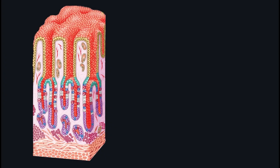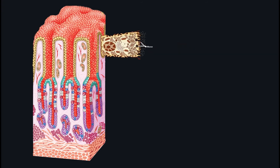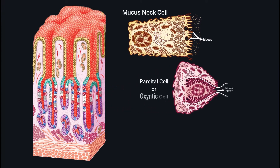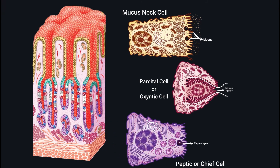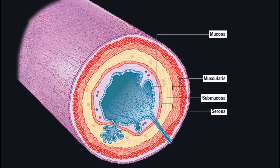There are three intrinsic glands we are concerned about. The first are the gastric glands, located in the stomach. These have three different types of cells: the mucus neck cells, which secrete mucus; the parietal or oxyntic cells, which secrete HCl and intrinsic factor; and the peptic or chief cells, which secrete pepsinogen. Down in the duodenum we have the Brunner's glands — these are the only intrinsic glands that extend down to the submucosa, while all other intrinsic glands are located within the mucosa itself.